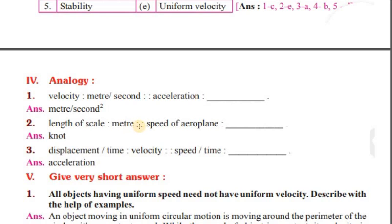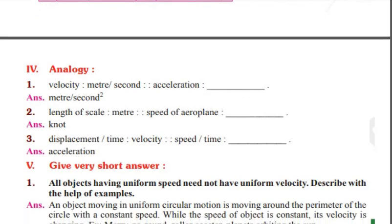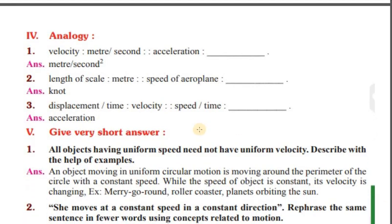The length of a scale is measured in meters. The speed of an aeroplane is not a scalar — it has direction. Displacement divided by time gives velocity. Acceleration is equal to change in speed divided by time.